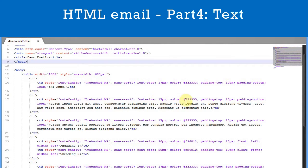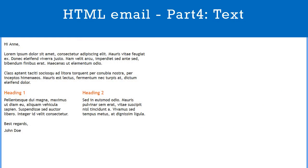Let's see how it looks in a browser. We have 3 paragraphs of text, then 2 columns with coloured headings and another 2 paragraphs for the email signature.